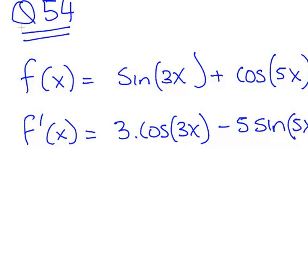So, derivative of that is 3 cos(3x) minus 5 sin(5x). So, that's using pretty much the sort of example from 52 and 53 together.